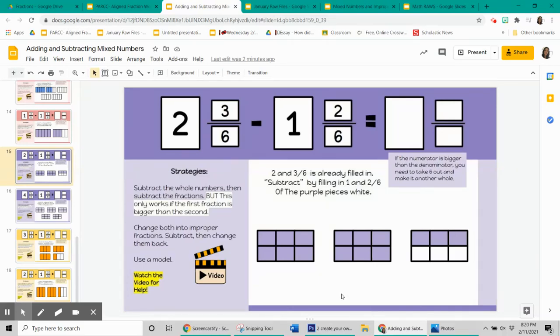All right, we are going to subtract 2 and 3 sixths minus 1 and 2 sixths, and I have three different strategies.